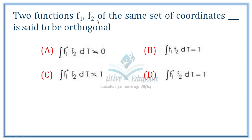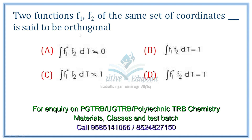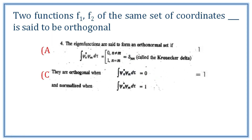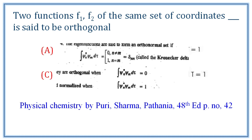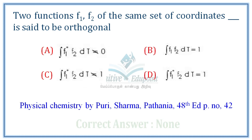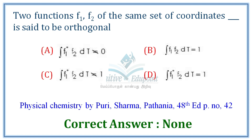Next question: Two functions F1 and F2 of the same set of coordinates are said to be orthogonal when their integral yields zero. If they yield 1, they are called orthonormal. If they yield 0, they are orthogonal. The correct answer requires the integral to equal zero.